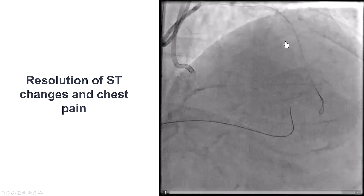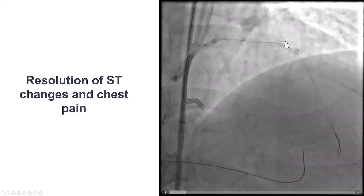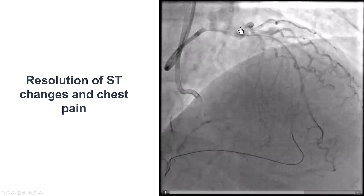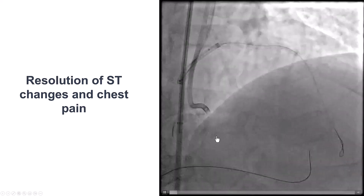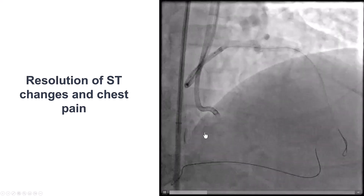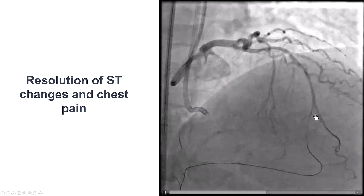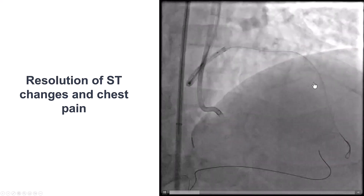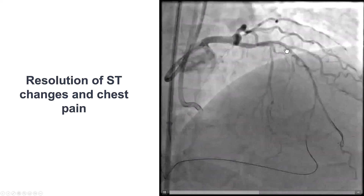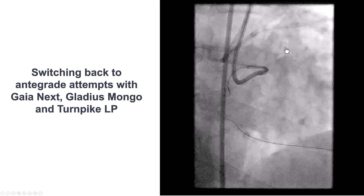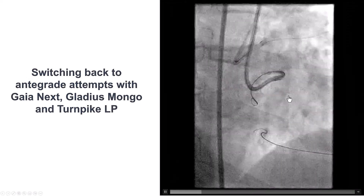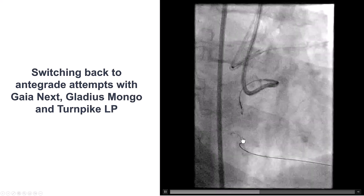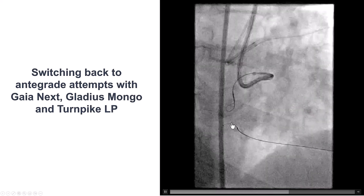We did an angiogram to verify that we did not have any dissection, thrombosis, or other problems in the donor vessel, and the donor vessel was appearing okay. Very importantly, we did have a safety wire in the LAD, which can be literally life-saving in case of a donor vessel complication. At this point, without a retrograde microcatheter, our penetrating capacity was very poor on the retrograde wire.